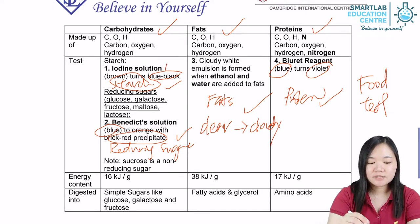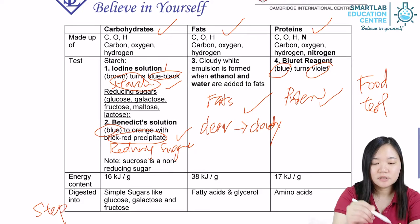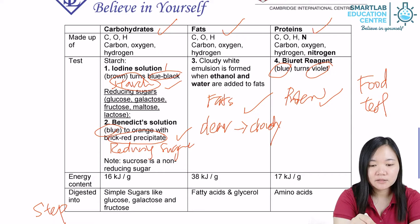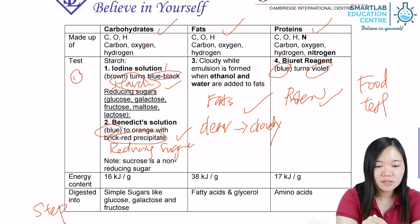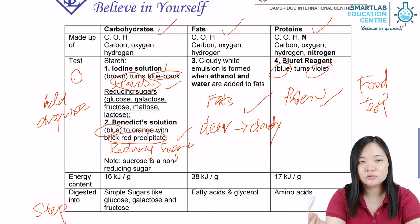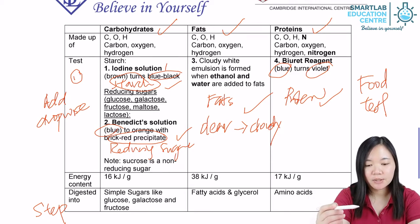There are steps required when you carry out each test. For the iodine test, it is quite easy. You just get the iodine solution and add it drop-wise to the starch solution, or to the sample that might or might not contain starch.